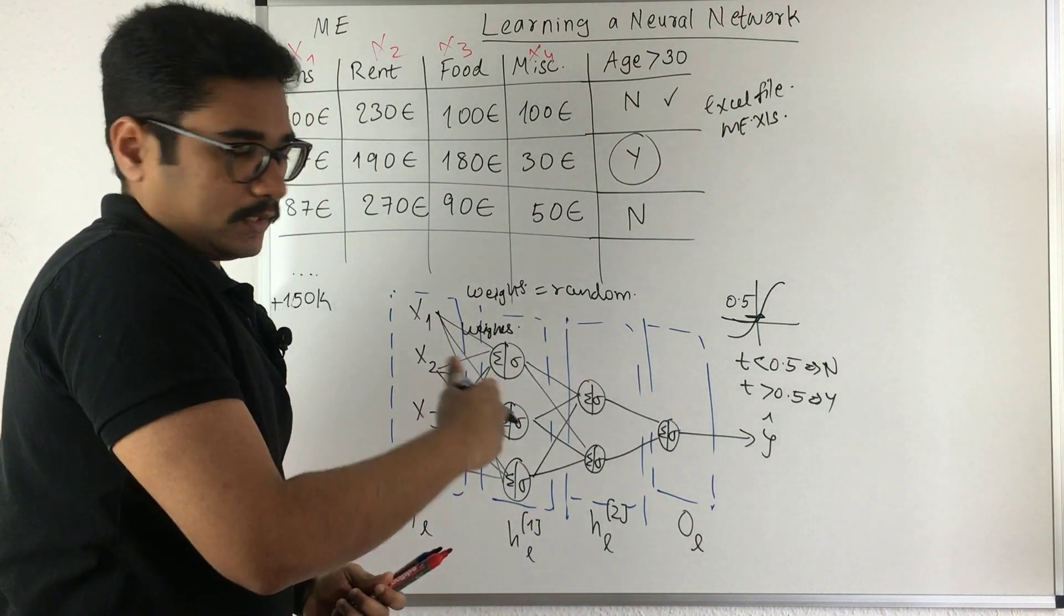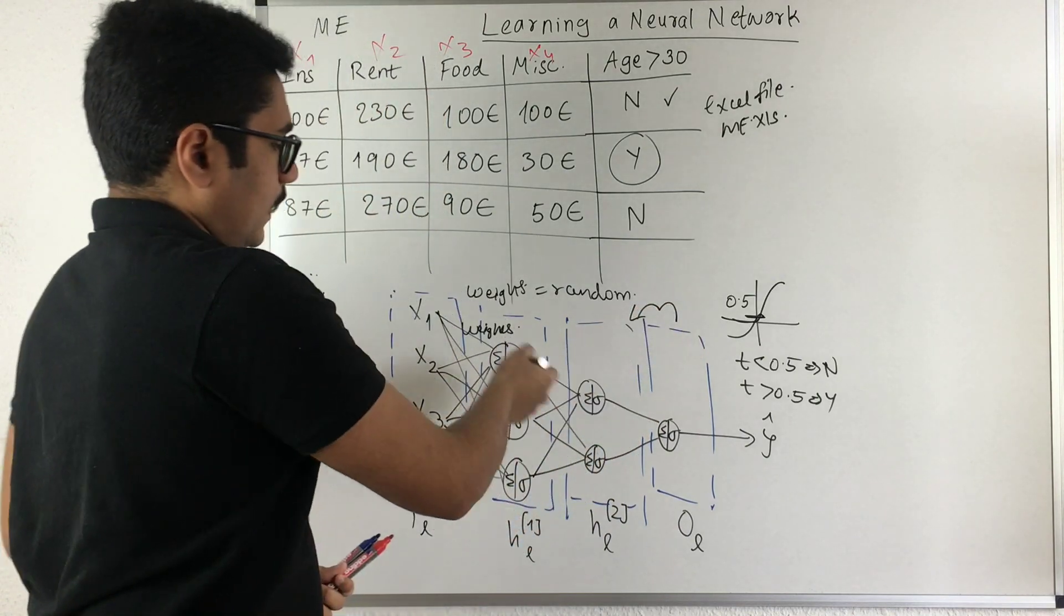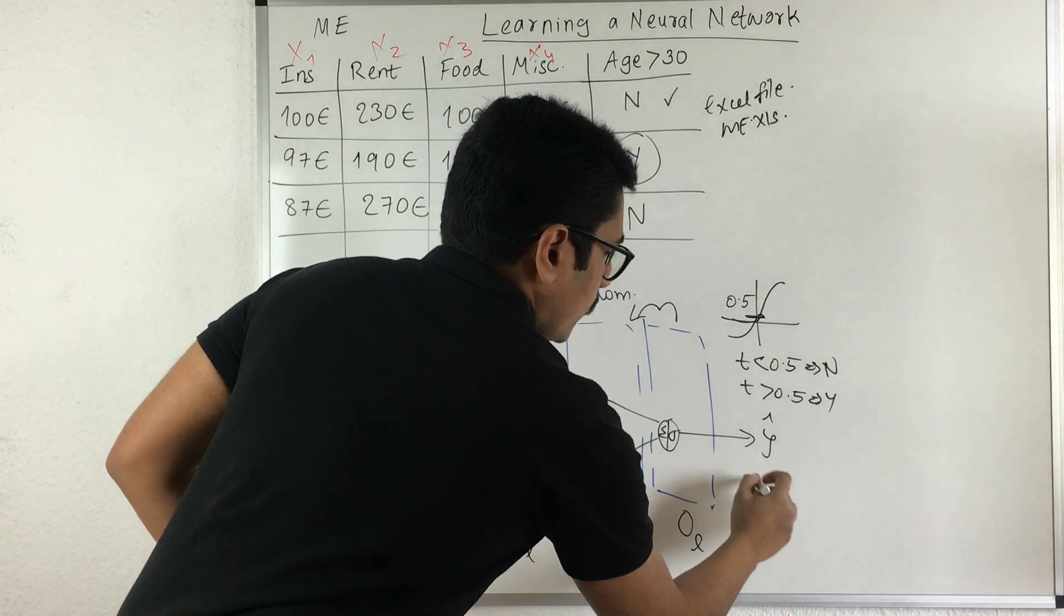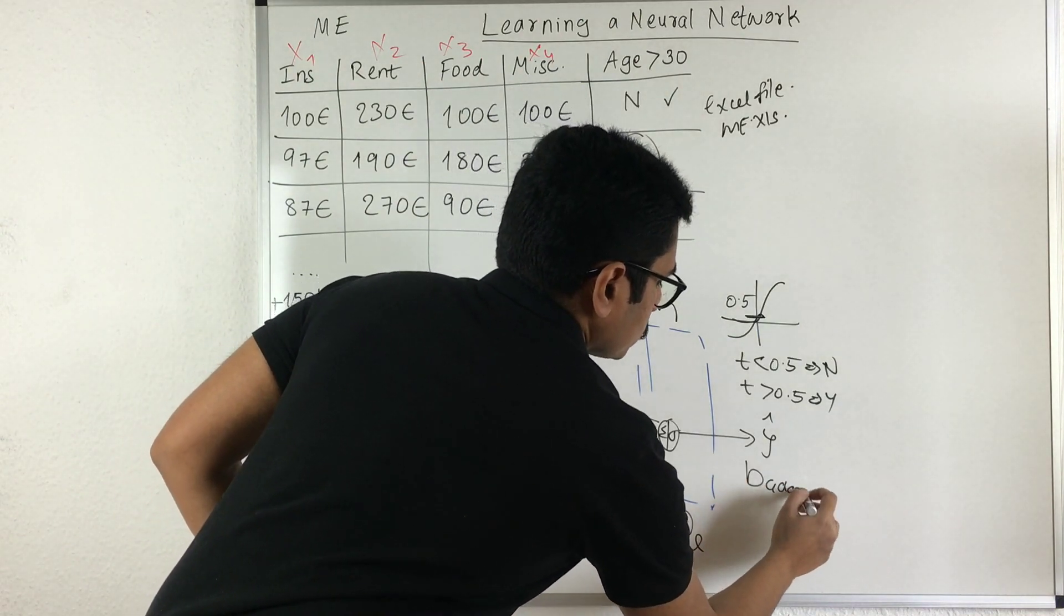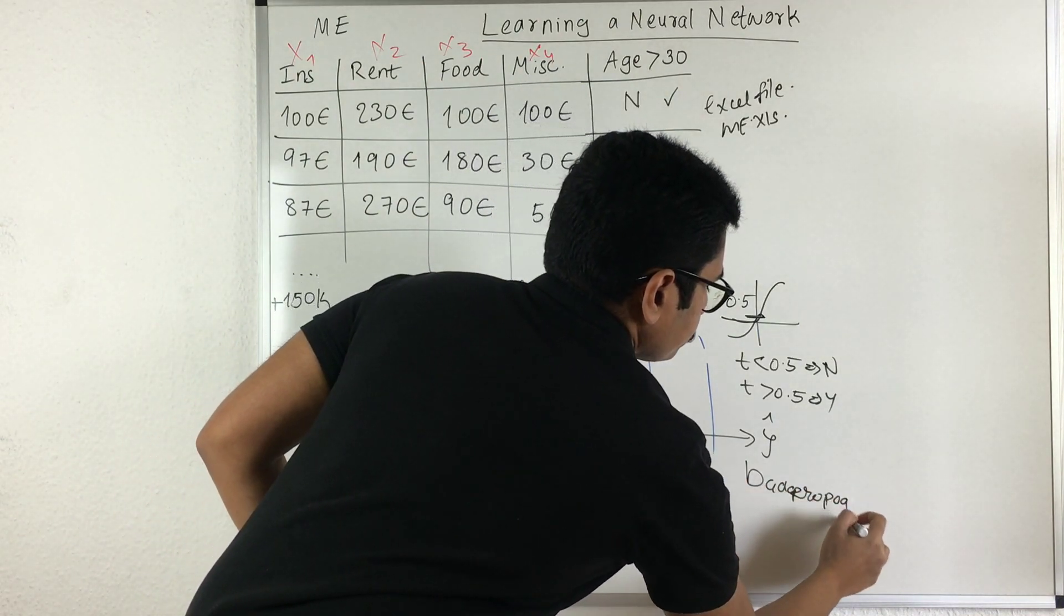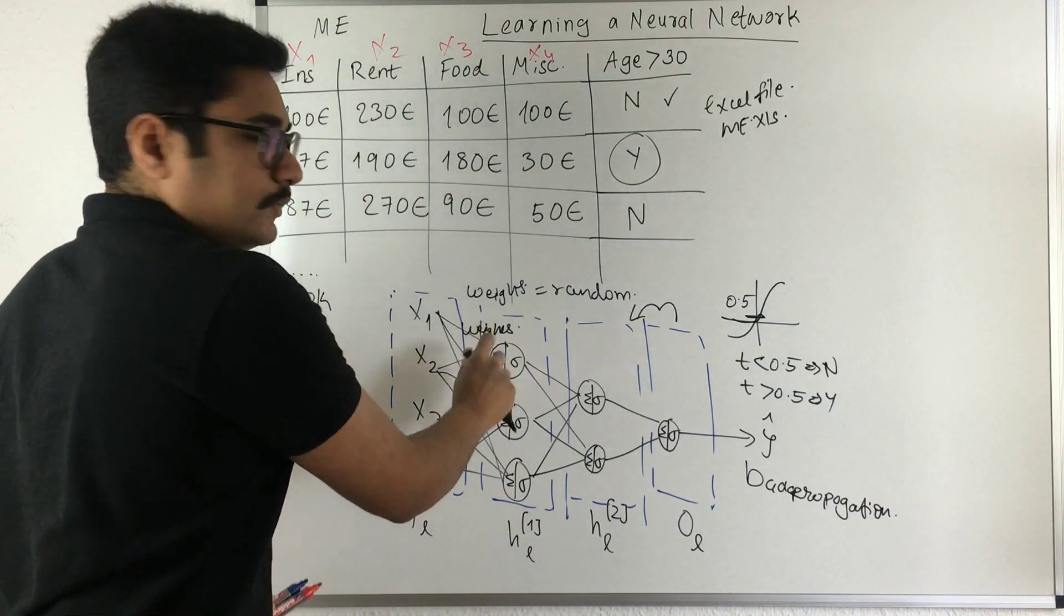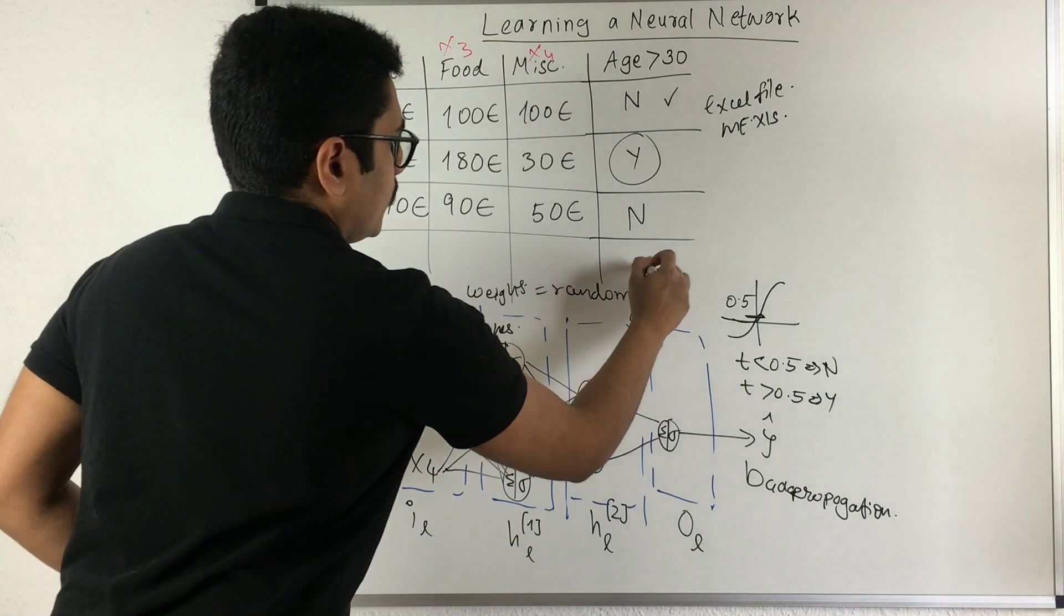This backtracking from one particular layer to the previous layer is done by an algorithm called backpropagation. And the weight updation at each particular unit is done with the help of gradient descent.